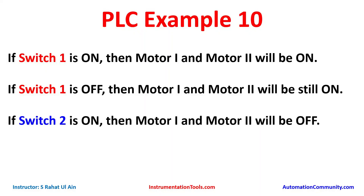Example 10: if switch 1 is on, then motor 1 and motor 2 will be on. If switch 1 is off, then motor 1 and motor 2 will still be on. If switch 2 is on, then motor 1 and motor 2 will be off. For switch 1 we will use a normally open contact, and for switch 2 we will use a normally closed contact.